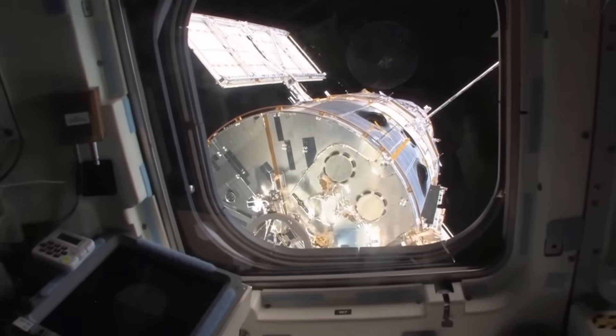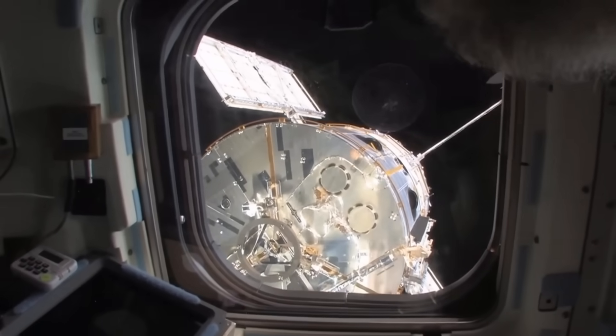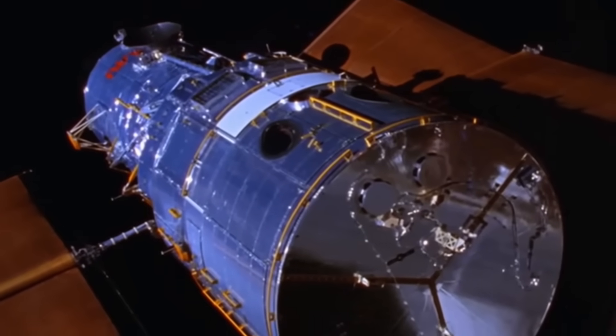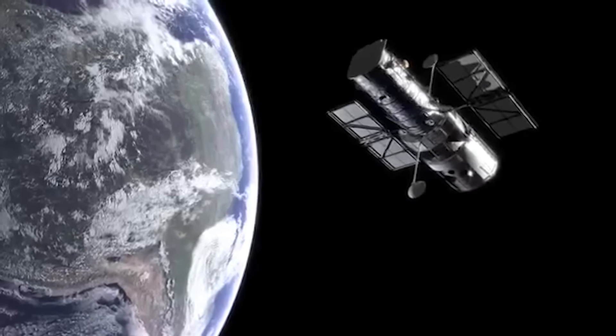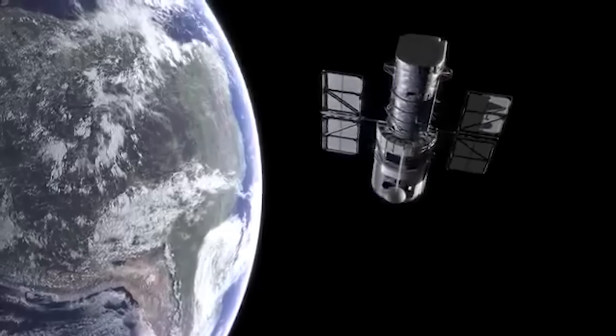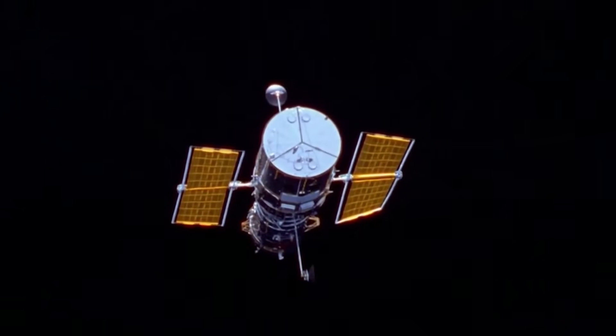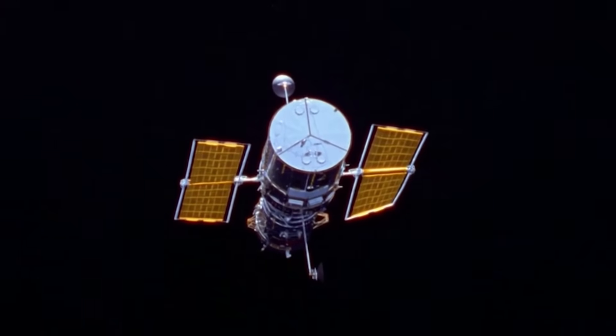However, since the shuttle program ended in 2011, we no longer have the ability to maintain Hubble, which is starting to take its toll on the telescope. Hubble has six gyros on board, which it uses to maneuver and point its telescope precisely toward its target. In the last five years, three of these gyros have failed.